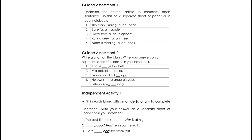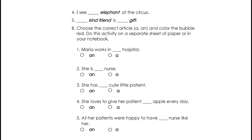Independent Activity 1. Fill in each blank with an article A or AN to complete the sentence. Number 1: The best time to see blank star is at night — correct, it's A. Number 2: Blank good friend tells you the truth. Number 3: I ate blank egg for breakfast. Number 4: I see blank elephant at the circus. And Number 5: Blank kind friend is blank gift.